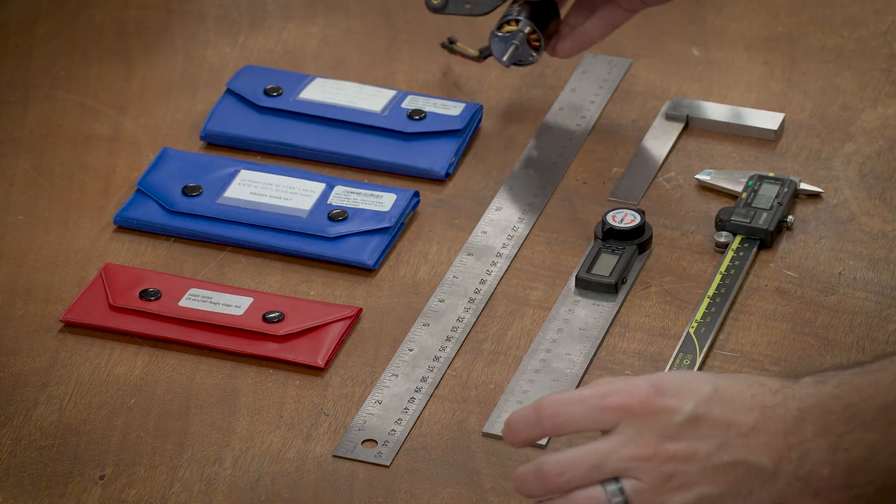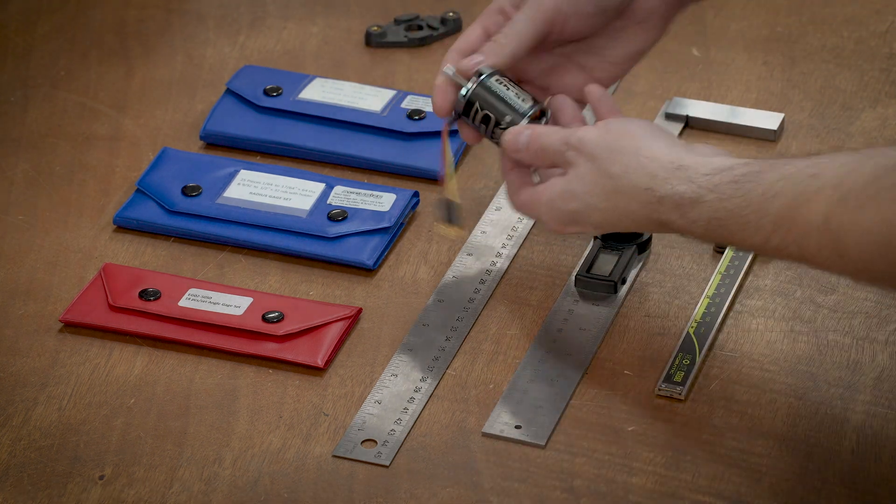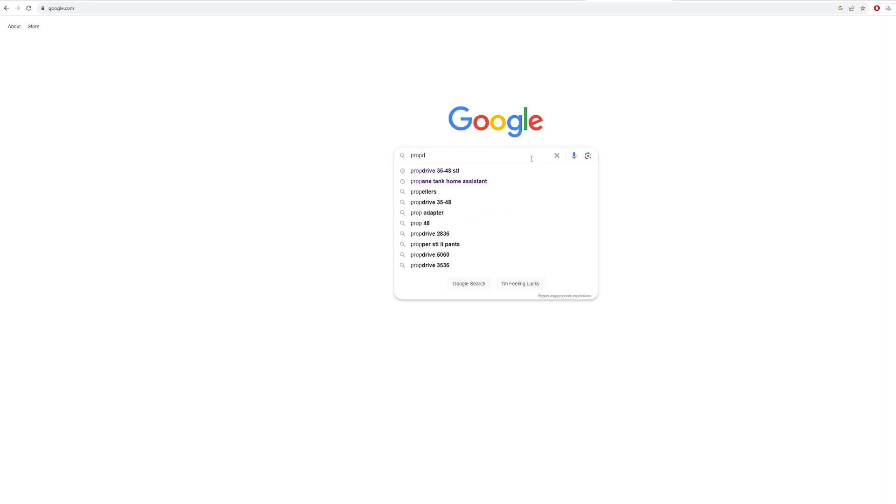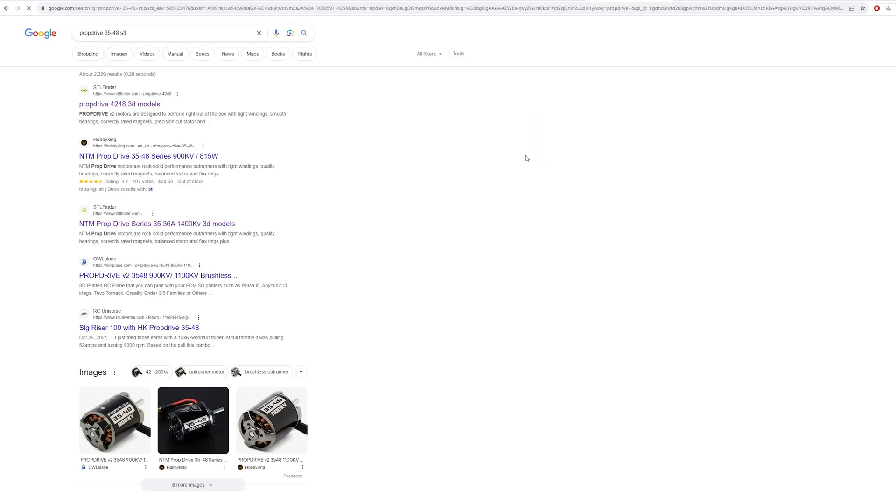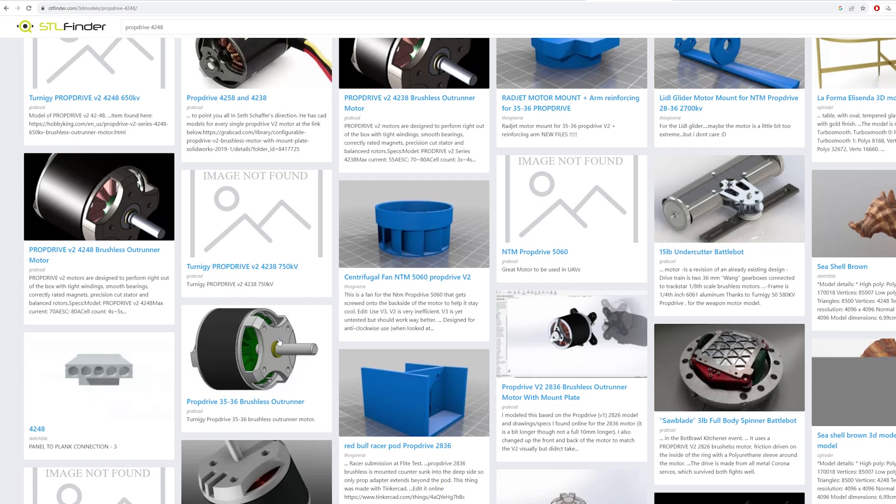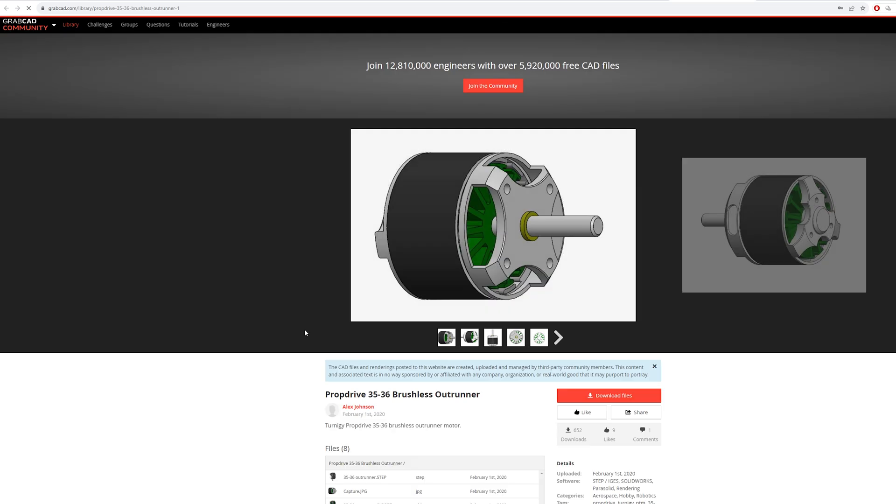The first thing that I generally do is go online, take the model number - this is a prop drive 3548 - and search for that and throw STL on the end of it. Usually I can find something. There are a couple go-to sites that I always use. GrabCAD is one, 3D Content Central is another. Generally, if a model exists, it's going to be on one of those two sites.